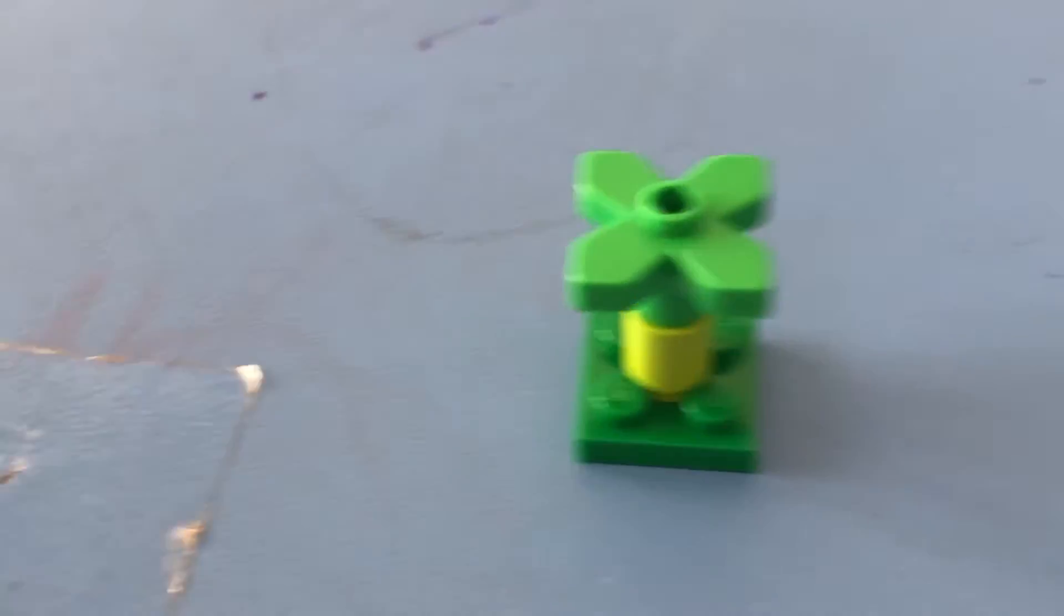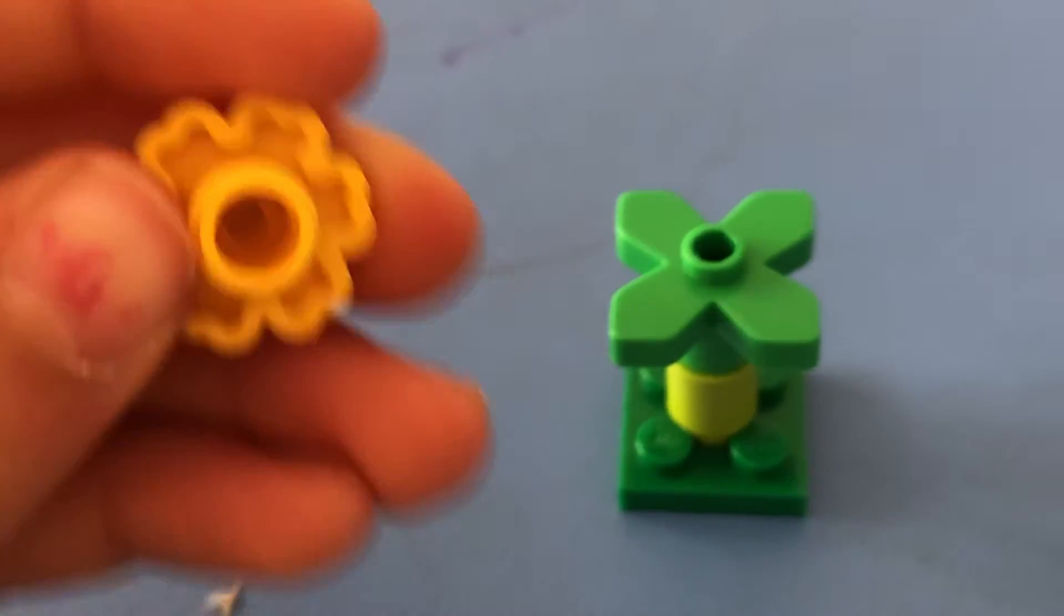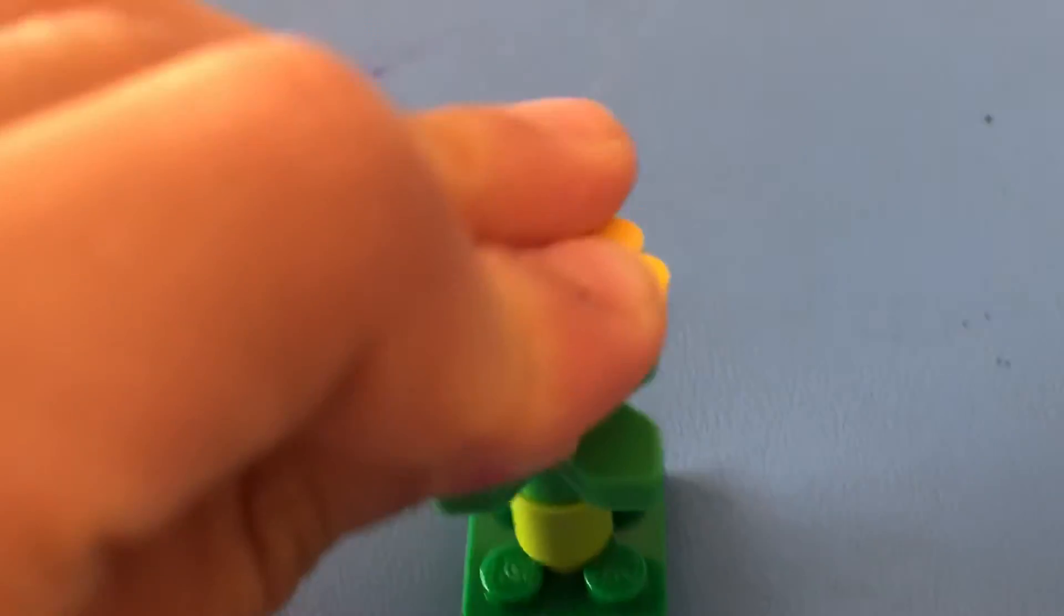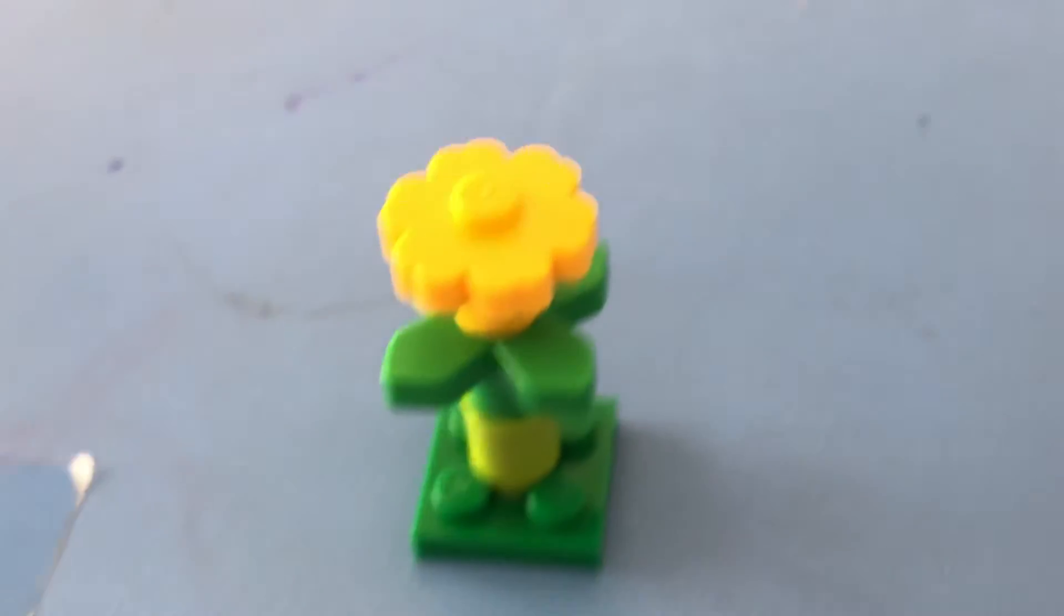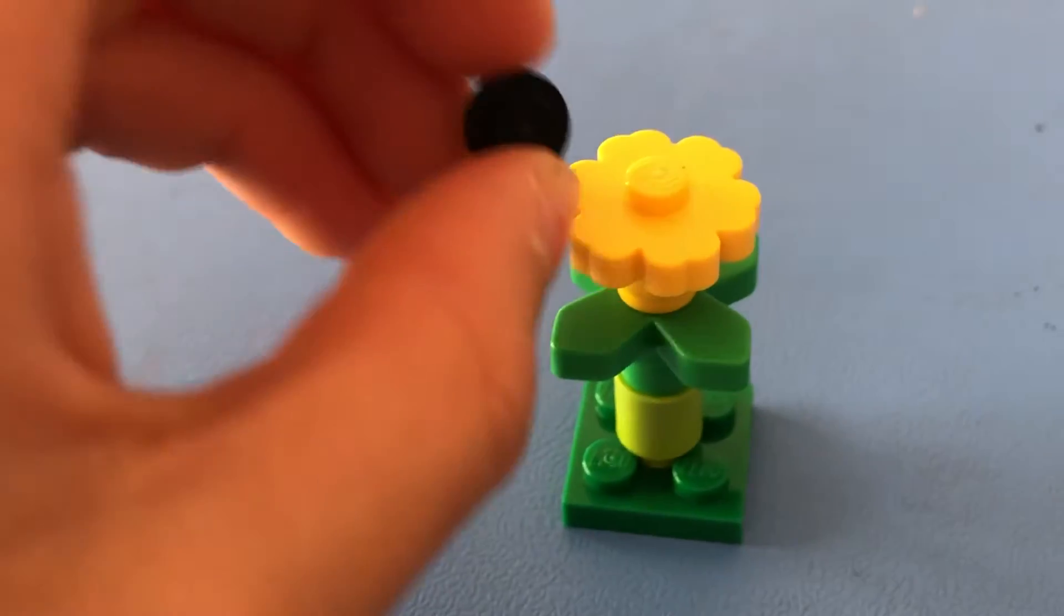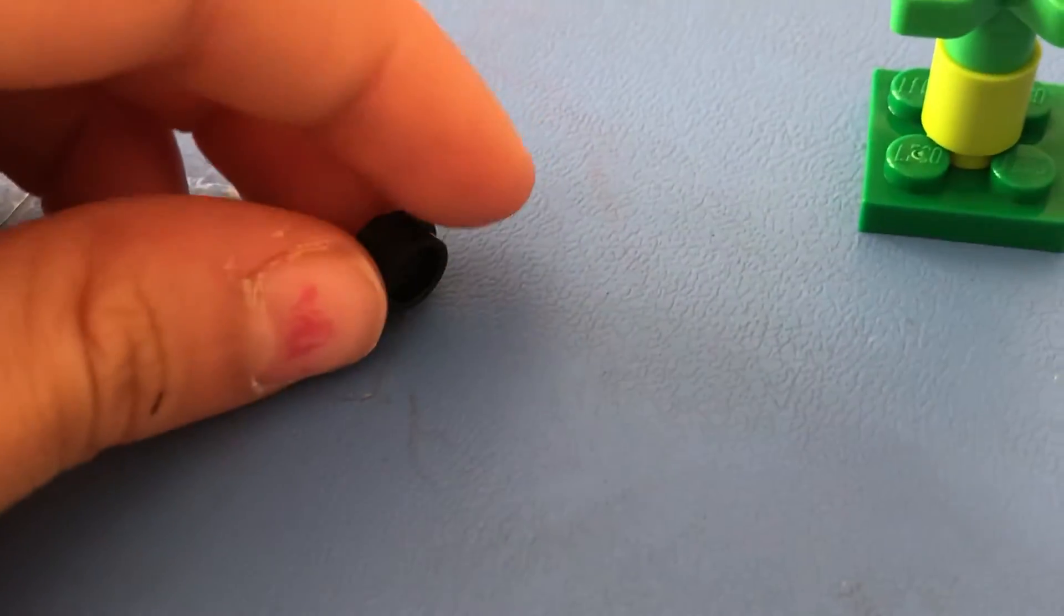Now for the flower. This is the piece we're using for the flower. Again, attach the bigger side. Now the last part of the flower, the center. Use this piece. It's hard to see because it's black. There we go.